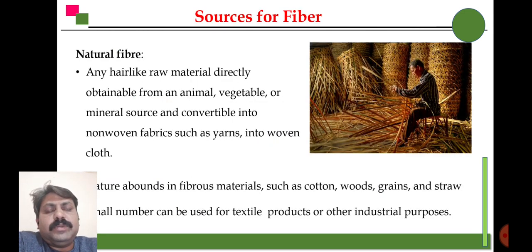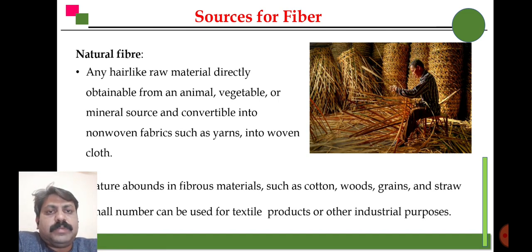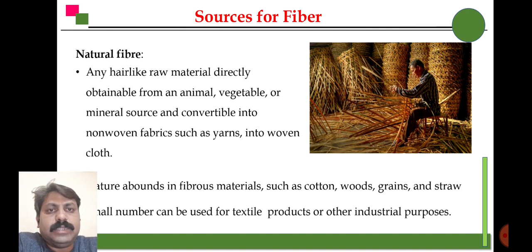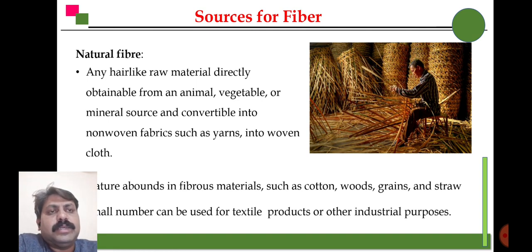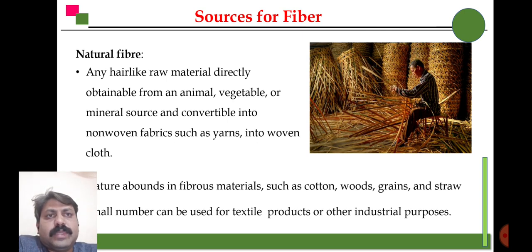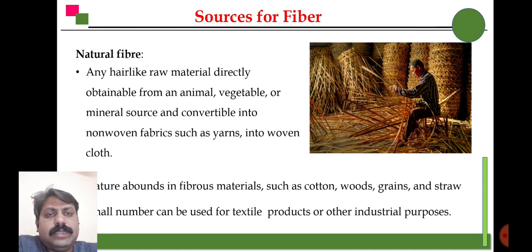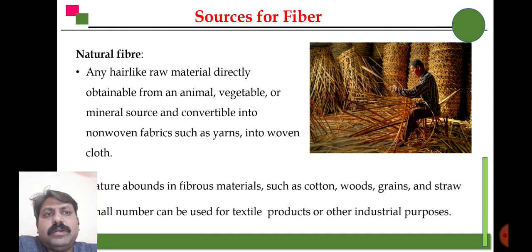We will look at each of these resources one by one. The first one is fiber — we are getting fiber from plants. There are synthetic fibers also, but using synthetic fiber involves more processing and is more costly economically. So we can shift towards natural, plant-based fiber. Plant-based fibers include hair-like raw material directly obtained from plants, vegetables, or animals, and these are converted into woven cloth.